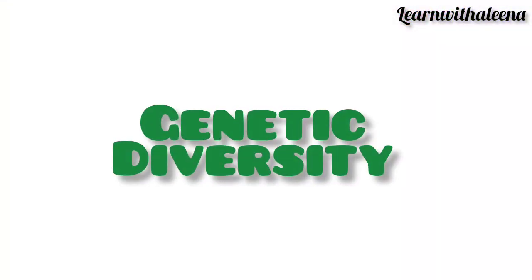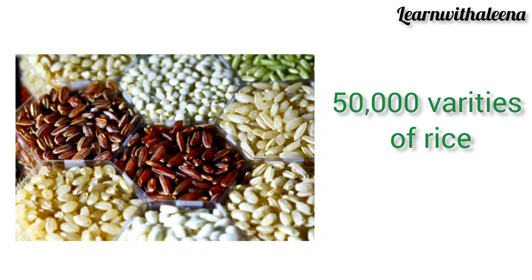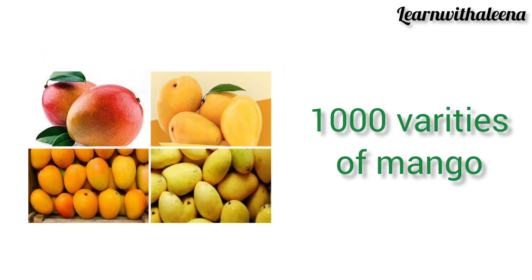Genetic diversity: a single species can show high diversity at the genetic level. For example, India has 50,000 varieties of rice and 1,000 varieties of mango.